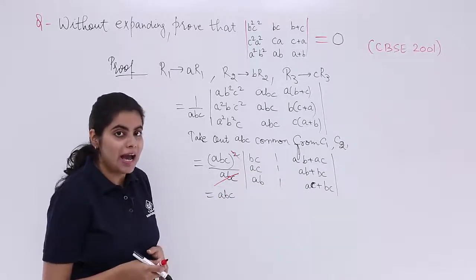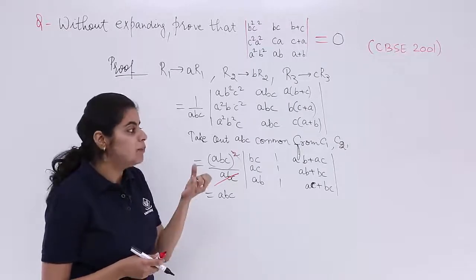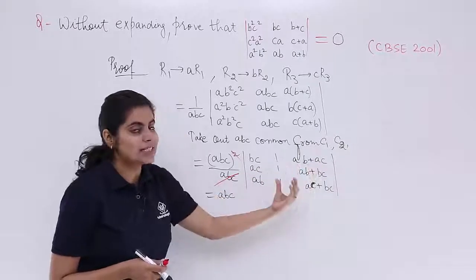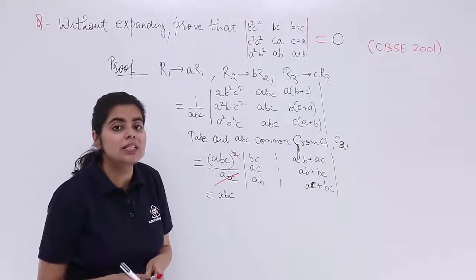So if I add C1 and C3, AB plus BC plus AC, AB plus BC plus AC, AB plus BC plus AC will come which is needed.